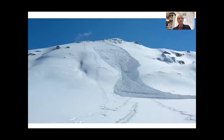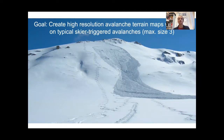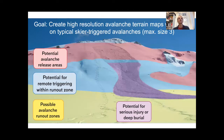We also have to think about the consequences if an avalanche would release. The goal of our study was to create high-resolution avalanche terrain maps focused on typical skier-triggered avalanches reaching a maximum size class 3, covering different terrain sections: potential release areas between 30 and 50 degrees slope angle, terrain below where avalanches can be triggered remotely, run-out areas, safe spots, and the potential consequences such as serious injury or deep burial.